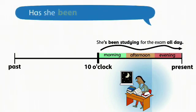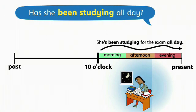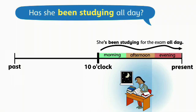We can use Yes-No questions and the Present Perfect Continuous to ask questions about how long an action has been going on.